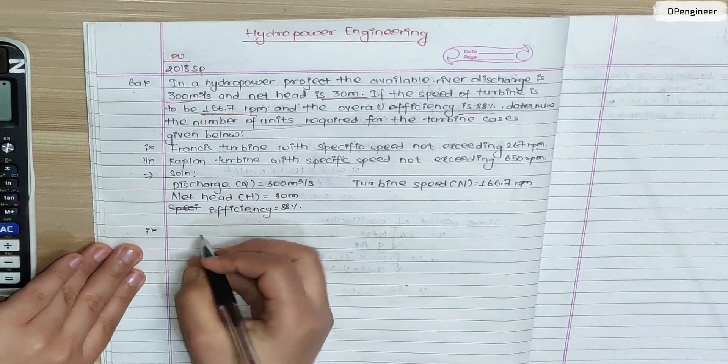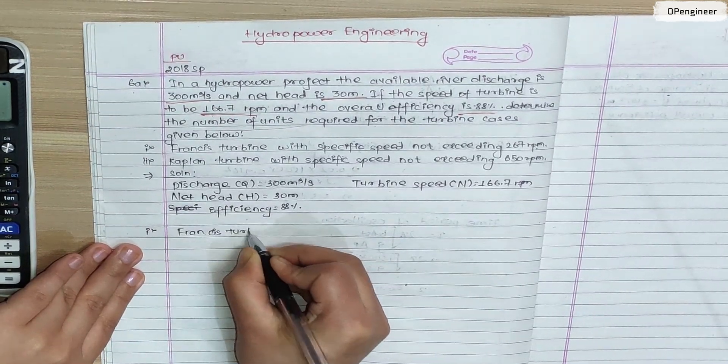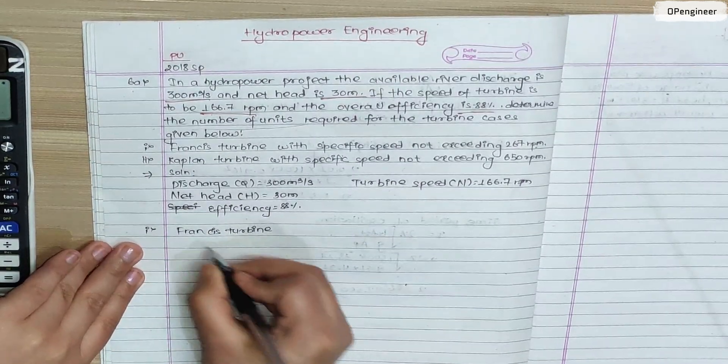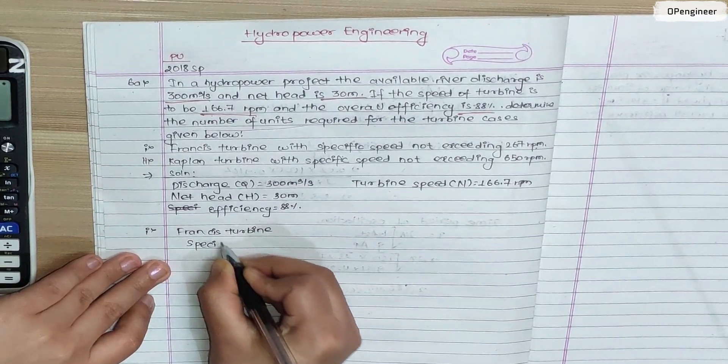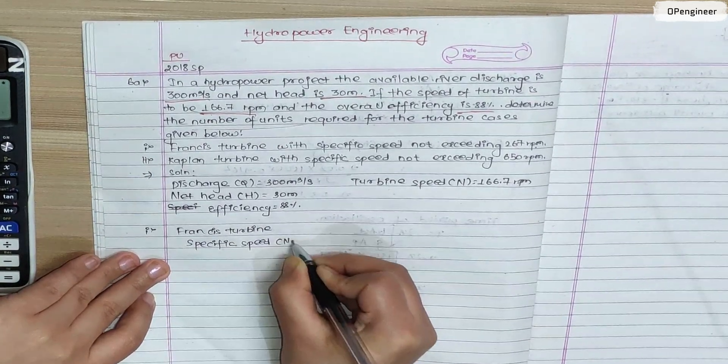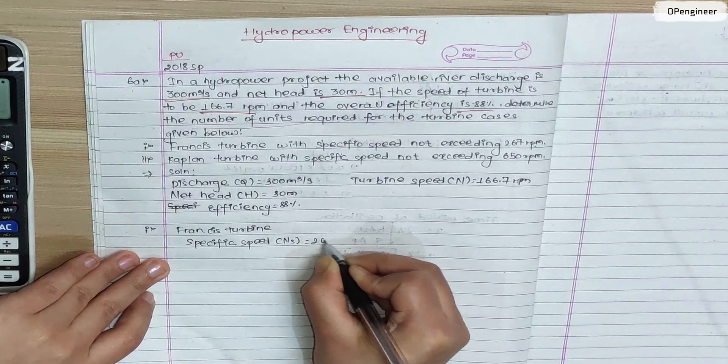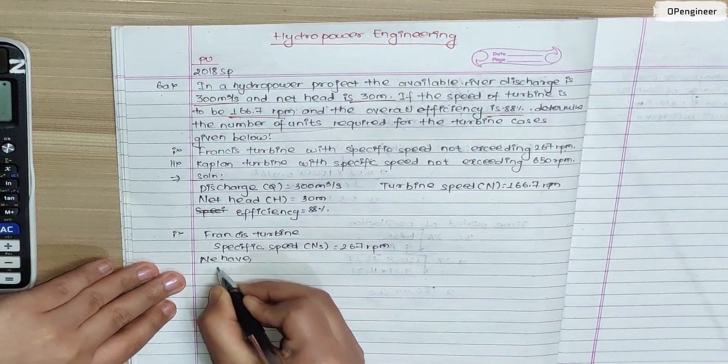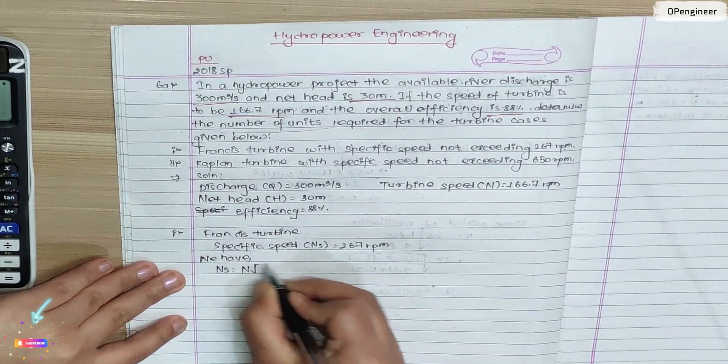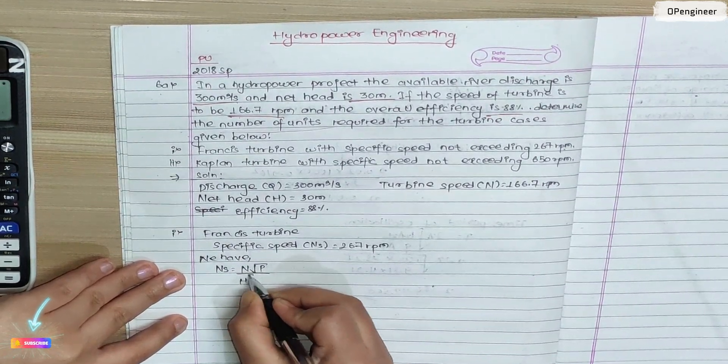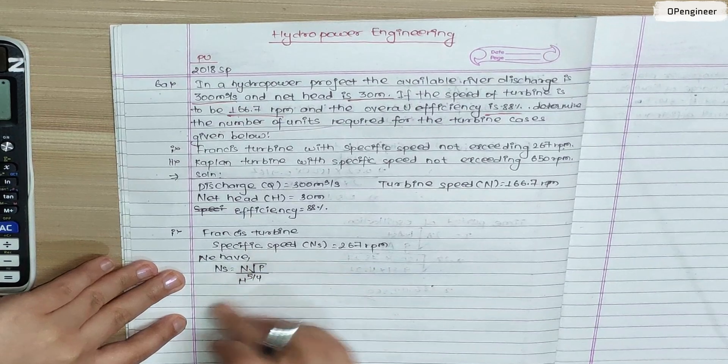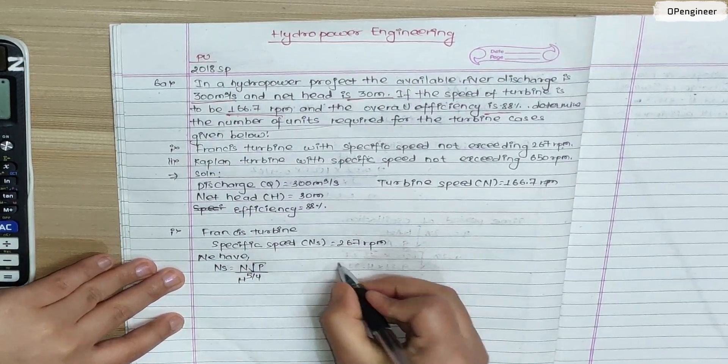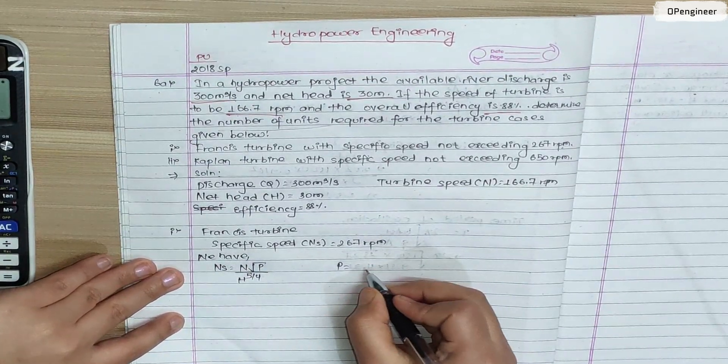So first, we are going to solve for Francis turbine. For this we need specific speed. Specific speed Ns = 267 rpm. We have the specific speed formula, and for this we need to calculate the power.